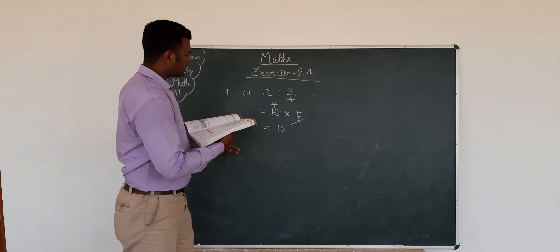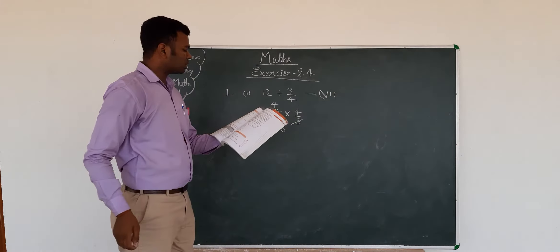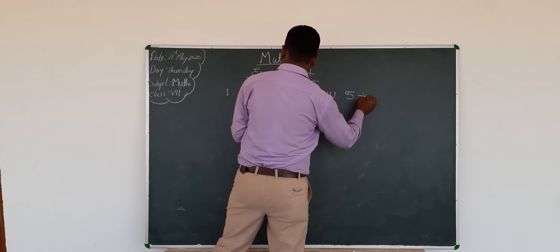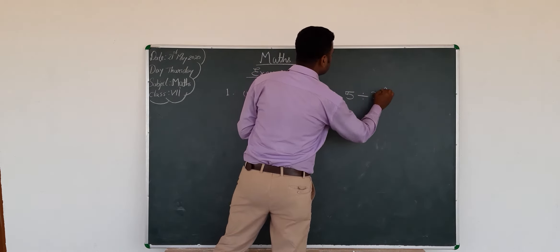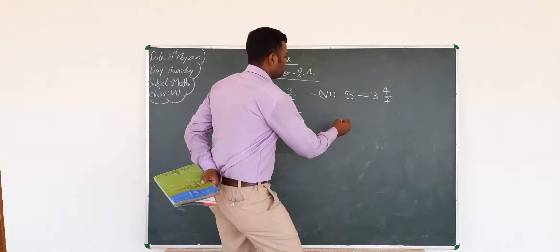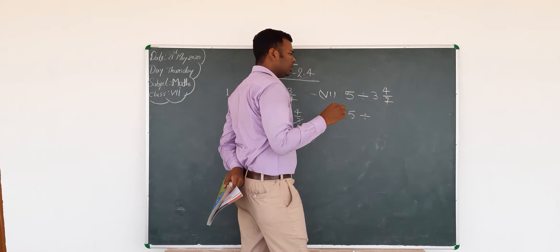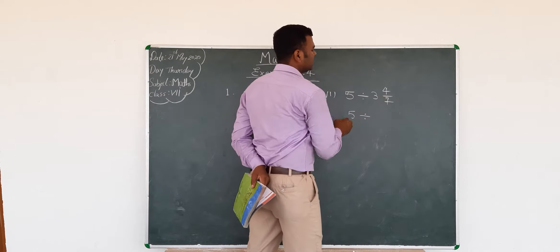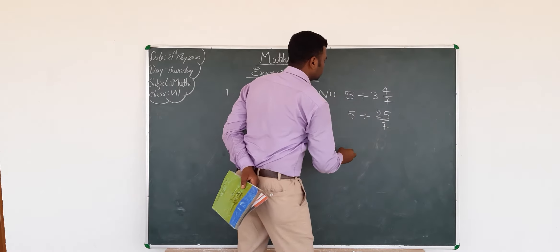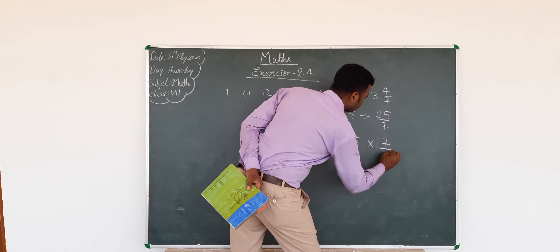One more question for you, number 6 of question 1: 5 divided by 3 4/7. First of all, just change this mixed fraction. 7 times 3 is 21, 21 plus 4 is 25, so 25/7. Change to multiplication, 5 multiplied by 7/25.